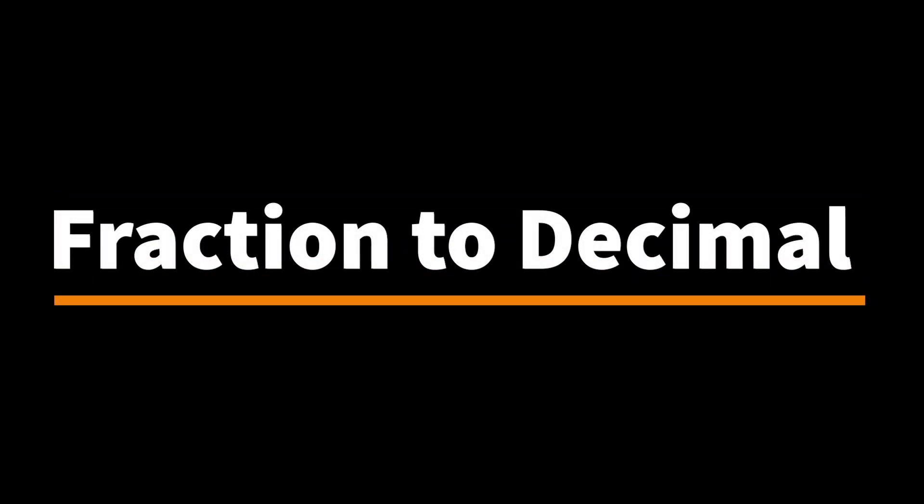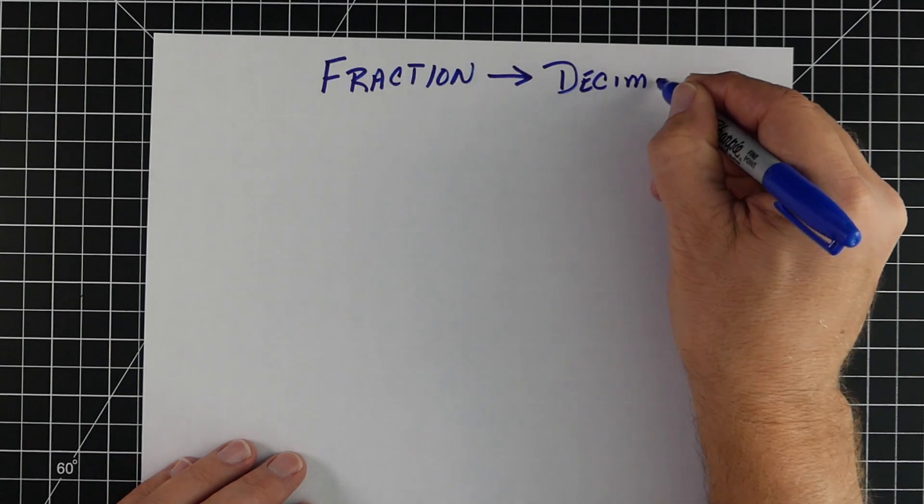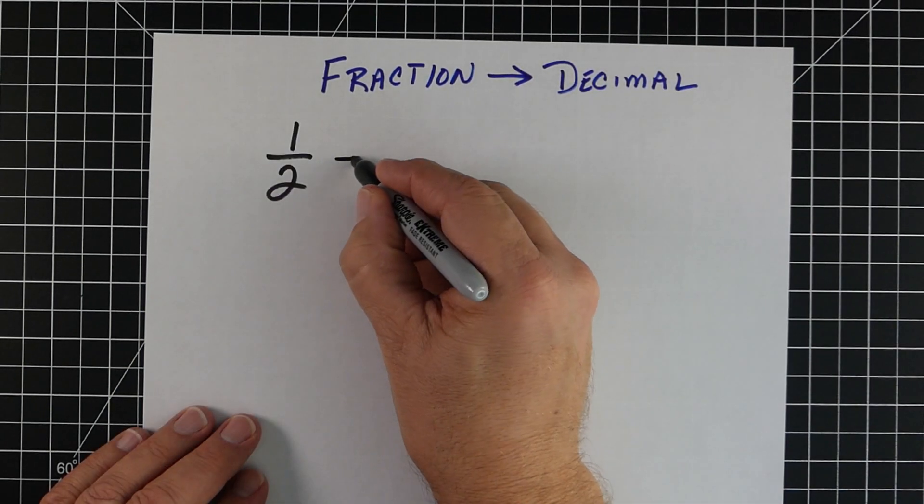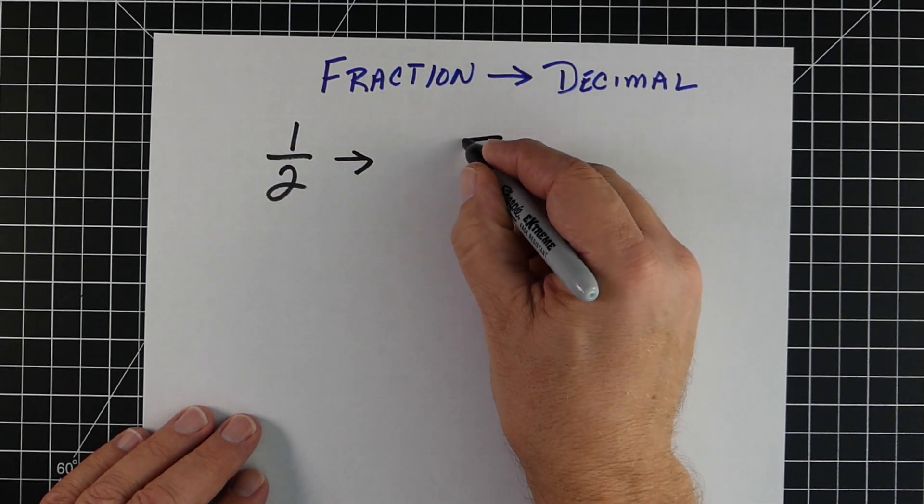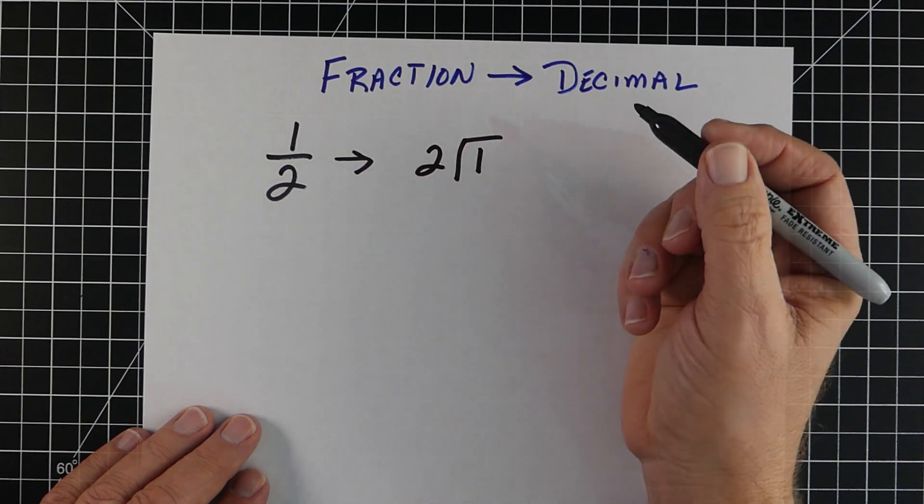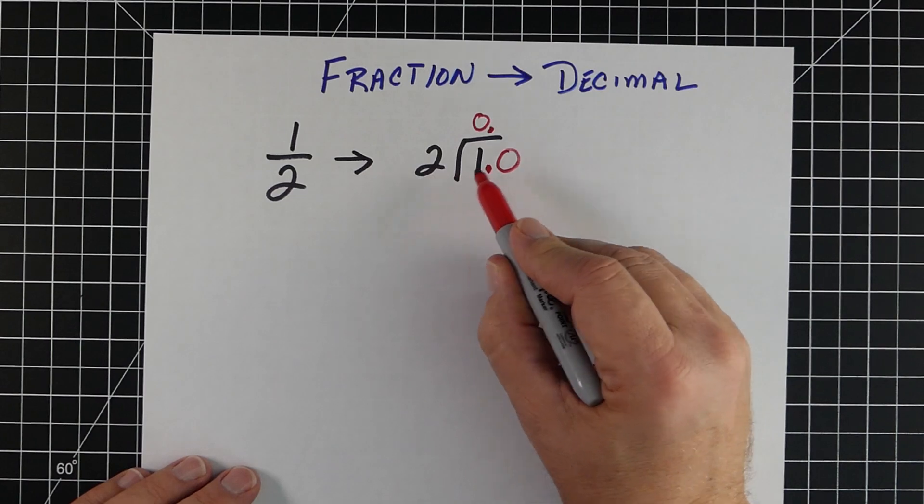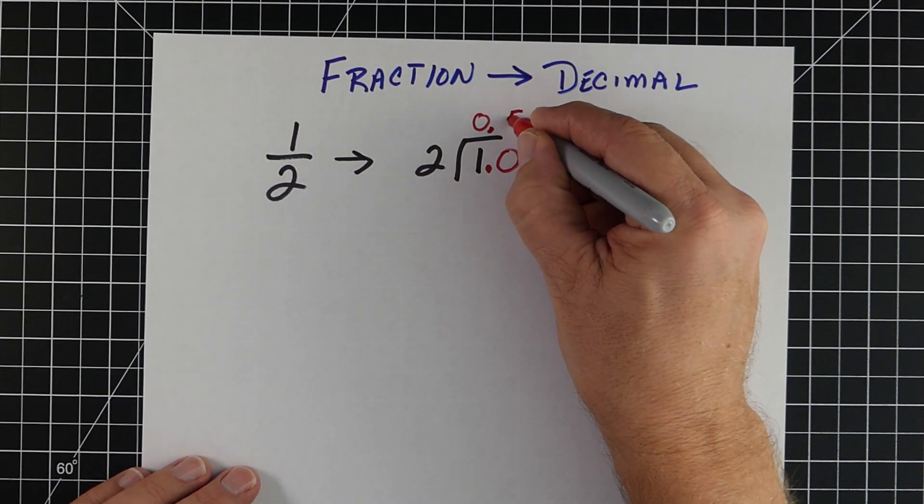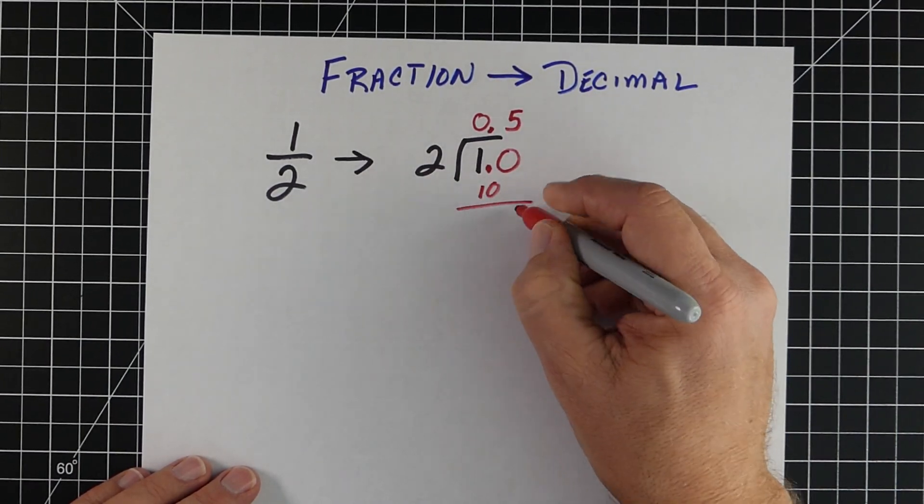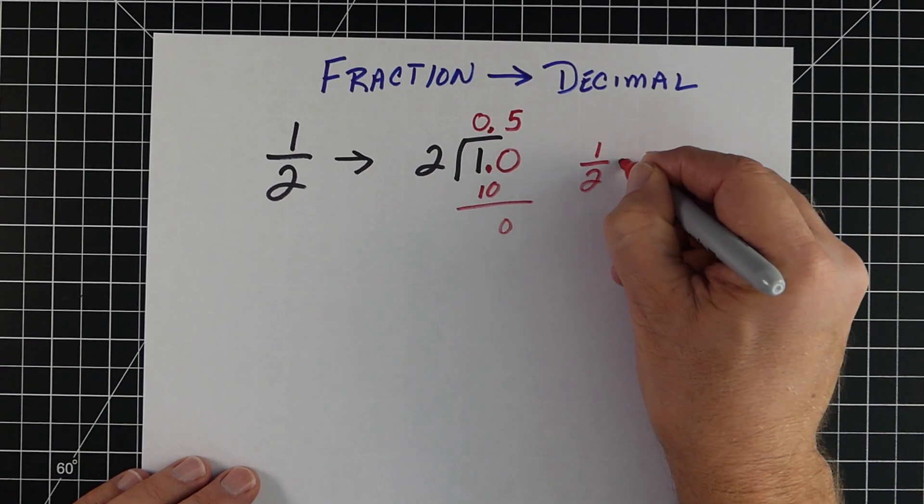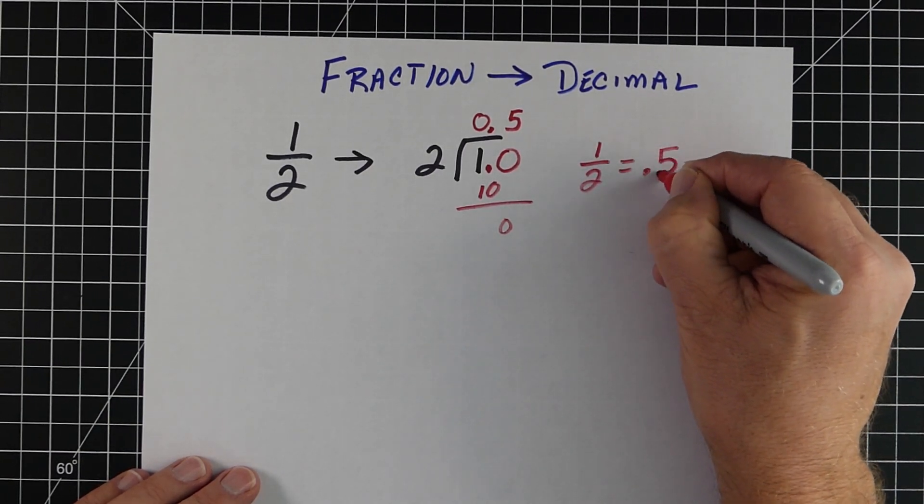The situation is making a fraction into a decimal. We talked about this example earlier - the fraction one half. We know it's 1 divided by 2. We know 2 cannot go into 1, so it's 0. We add a decimal and a 0. We're doing that decimal straight up. 2 will go into 10 five times. There's no remainder, so we're done. So 1 half equals 0.5.